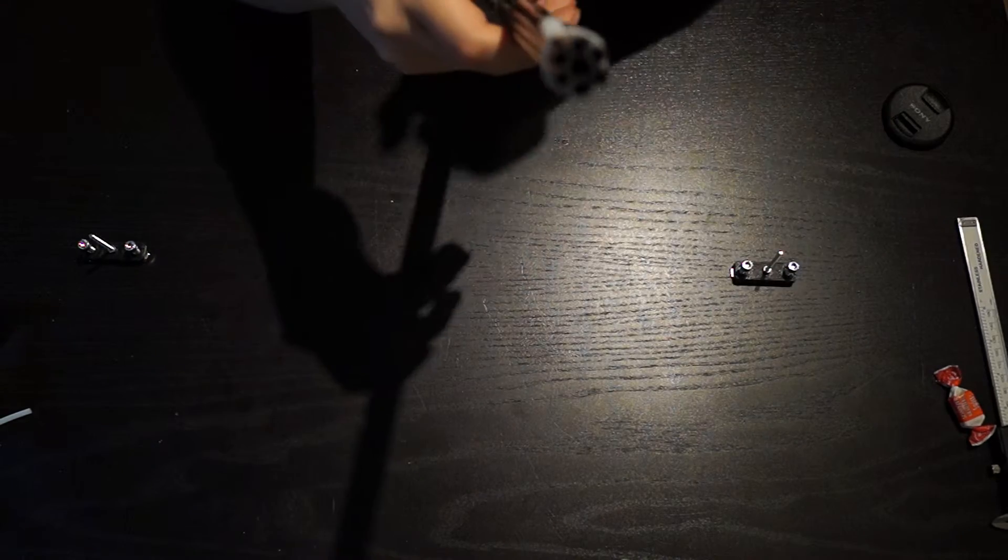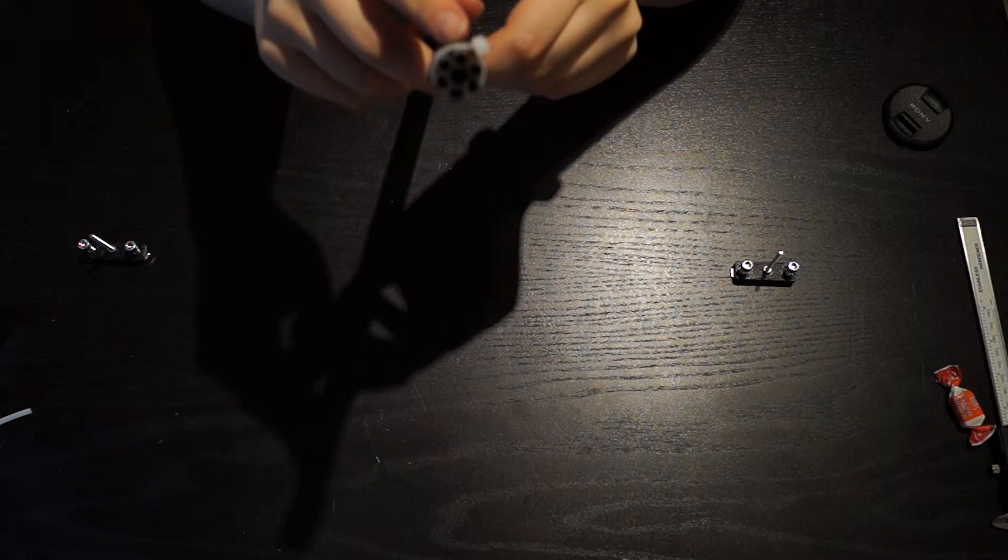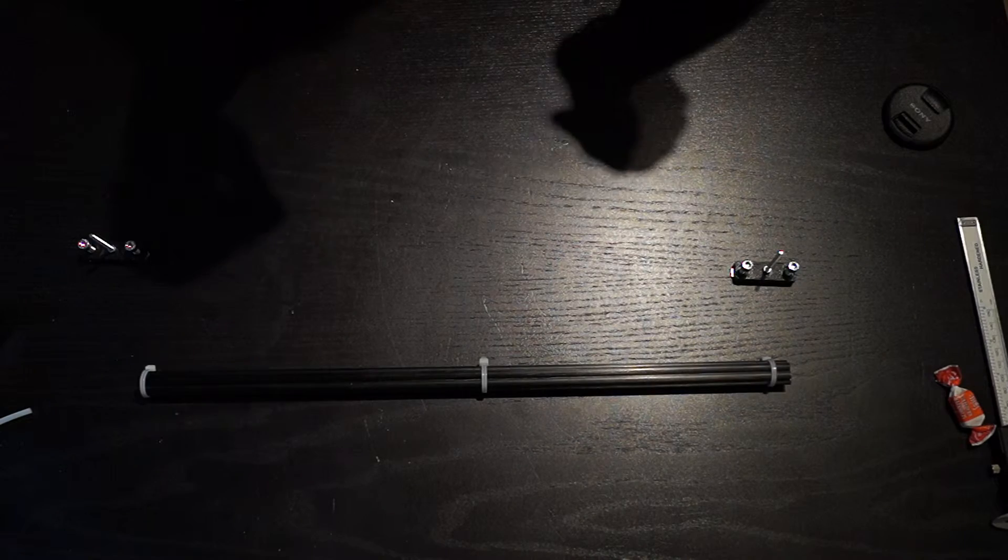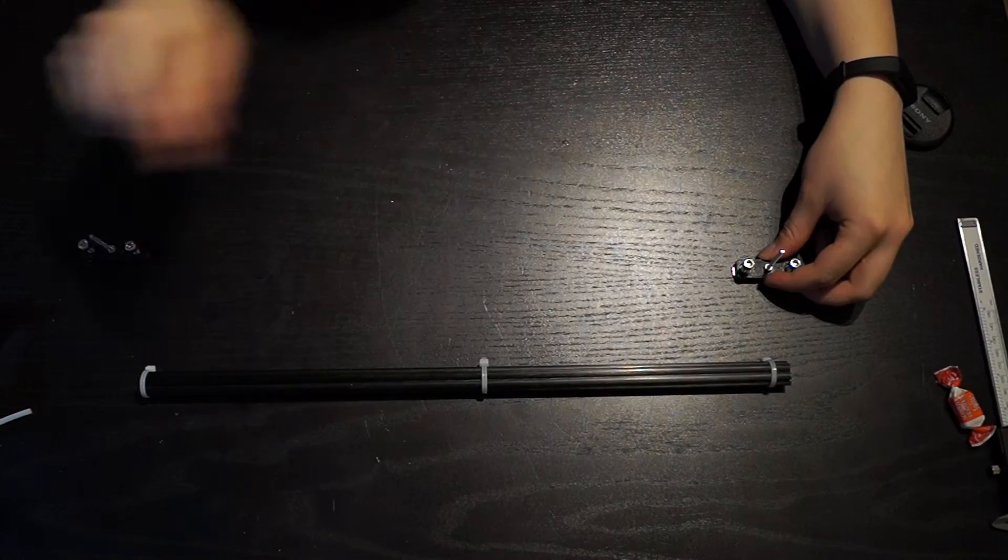But M4. Because, oh yeah, I should mention that. These are 6mm outer diameter, 4mm inner diameter carbon fiber tubes. Yeah, so you put the Traxxas rod ends on here and here.